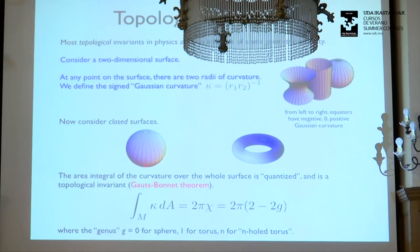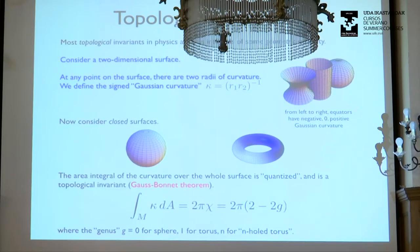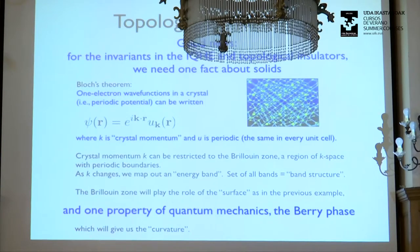The magic is that when I integrate the curvature over the whole manifold, I get something that is quantized — a topological invariant. The curvature of the sphere is 1/r², the surface area is 4πr², so the integral of curvature over the surface is 4π. For the torus, the positive curvature on the outside cancels the negative curvature on the inside and you get zero. We can do the same thing with complex vectors in Hilbert space — that's really where the Berry phase comes in.